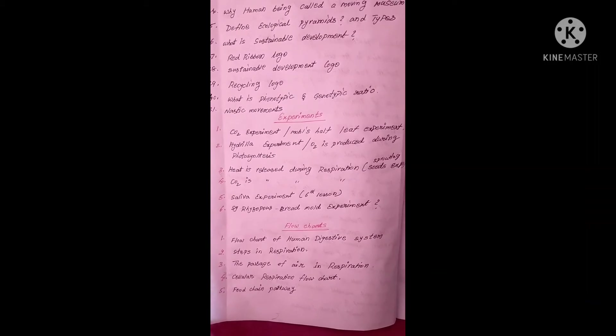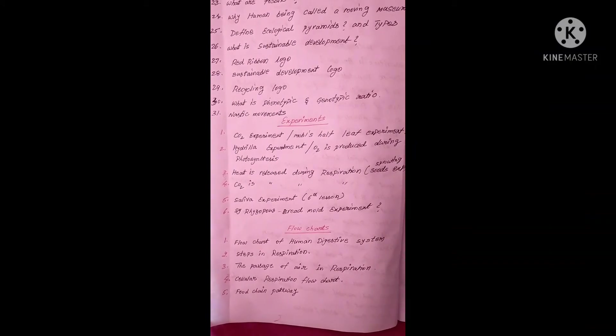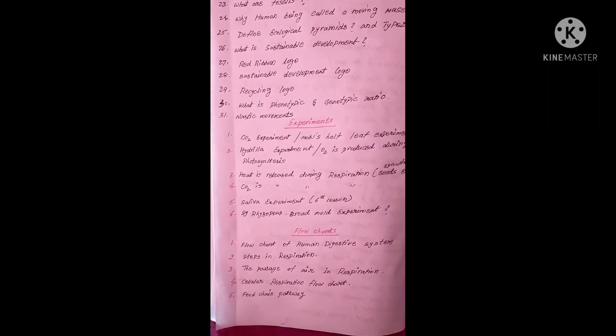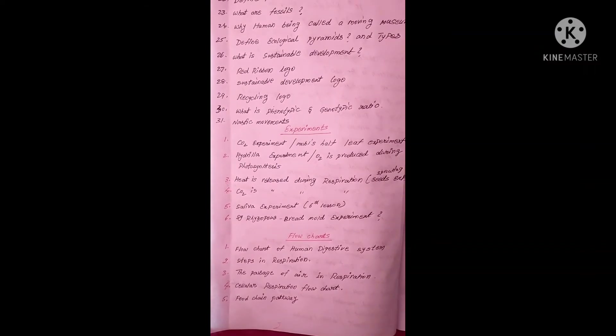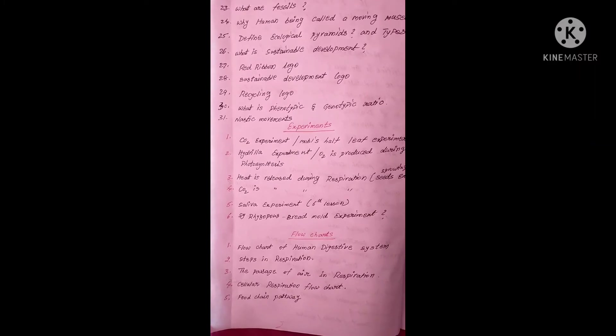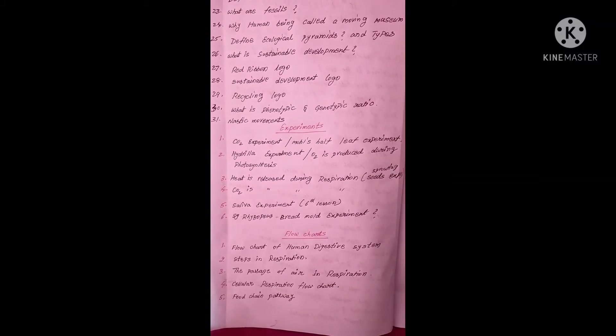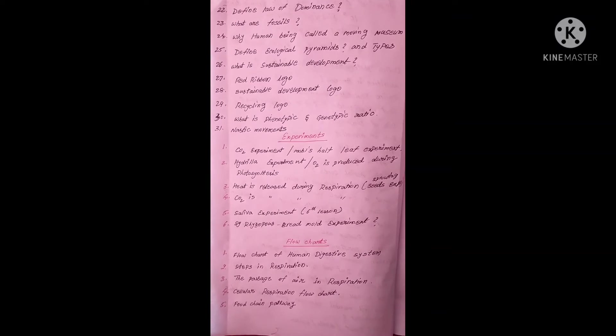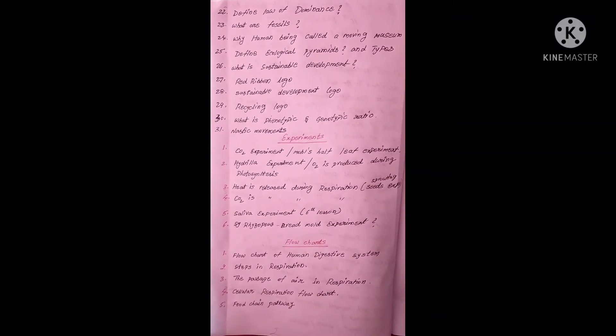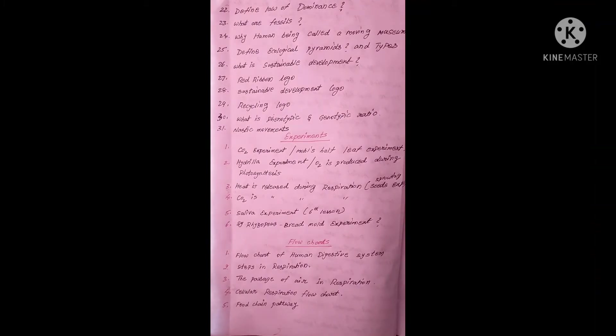There must be a flow chart — given for one or two mark questions. Important flow charts to learn: flow chart of the human digestive system; steps in respiration; the passage of air in respiration; cellular respiration flow chart; and the food chain pathway in the environment lesson (ninth chapter).